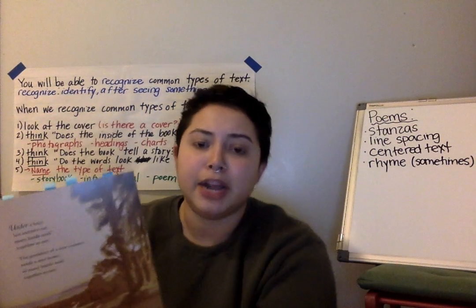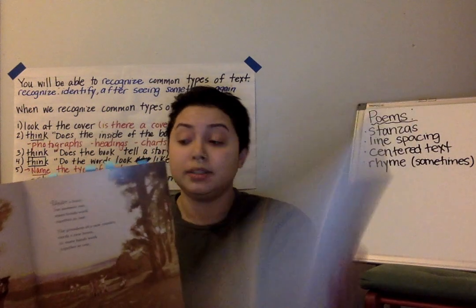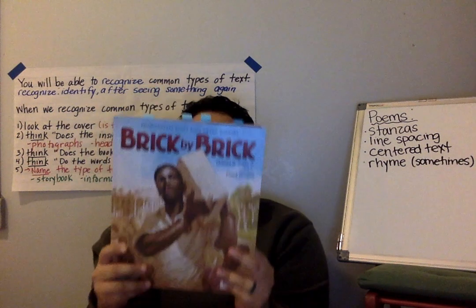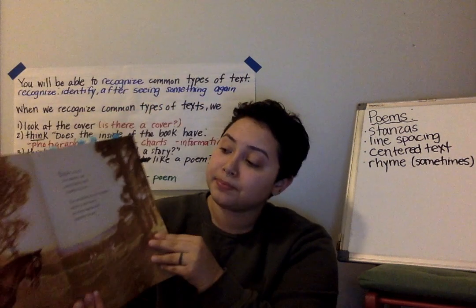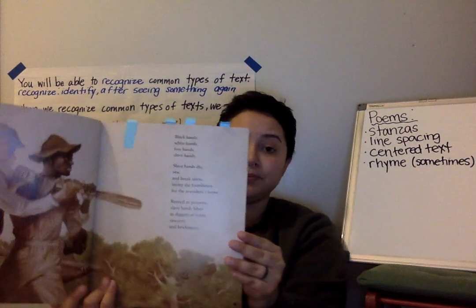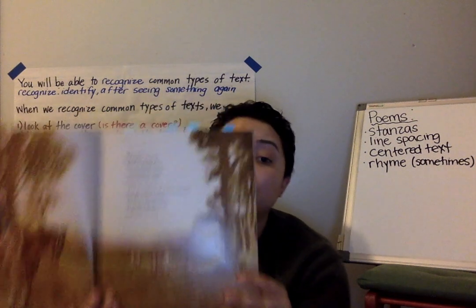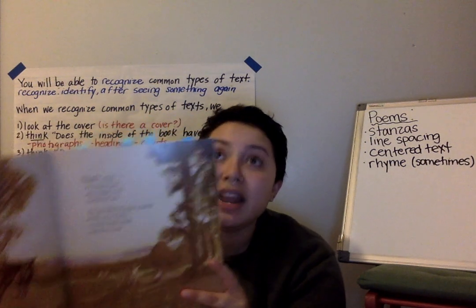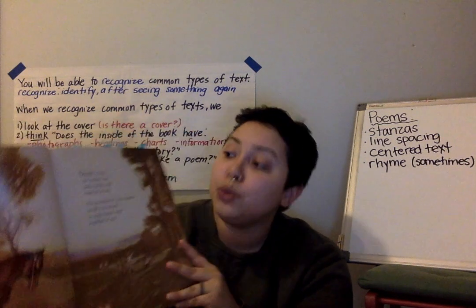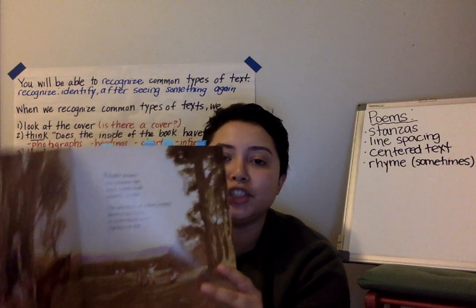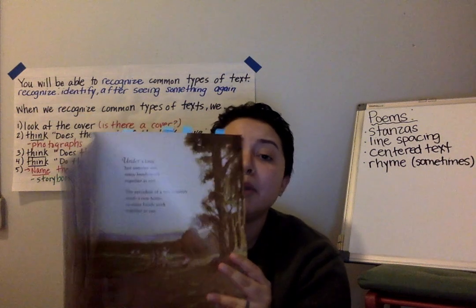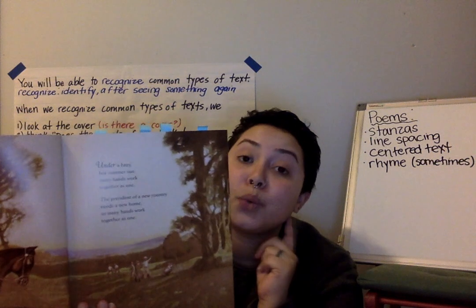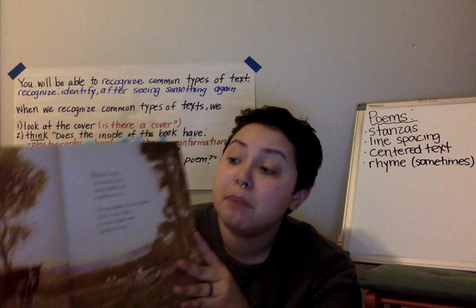Now I notice something different between my first poem and the one I'm reading right now. This one looks just like a regular storybook — I see illustrations on every page, and these illustrations are also helping tell a story. It's important that when you tell any teacher or adult the kind of text you are reading, you not only look at the illustration and whether or not it has a cover, but what the words sound like and what the words look like. When I was reading, I also noticed words that rhyme. Not all poems rhyme, but some words do.